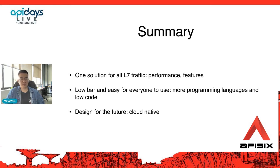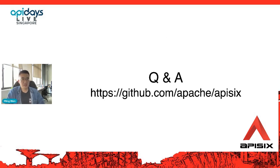APISIX implements a solution for processing all L7 traffic with great performance and all features for both north-south and east-west traffic. APISIX keeps a low bar and easy way for everyone to use, supporting more popular programming languages and even GUI. As a fast-growing open source project, Apache APISIX will continue adding more features. We hope APISIX is the best choice for cloud native. Please take a look at the GitHub repo.